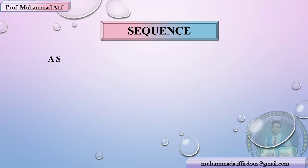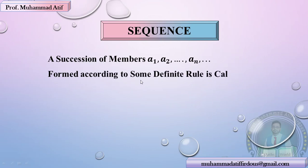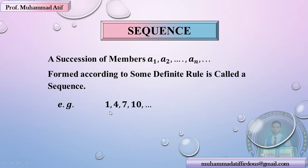What is a sequence? A succession of members a1, a2, up to a_n and so on, formed according to some definite rule. If there are members with a definite rule separated by a comma, then we say it is a sequence. For example, you have a sequence where the first term is 3, add 4, add 7, and so on — this succession of members we call a sequence.